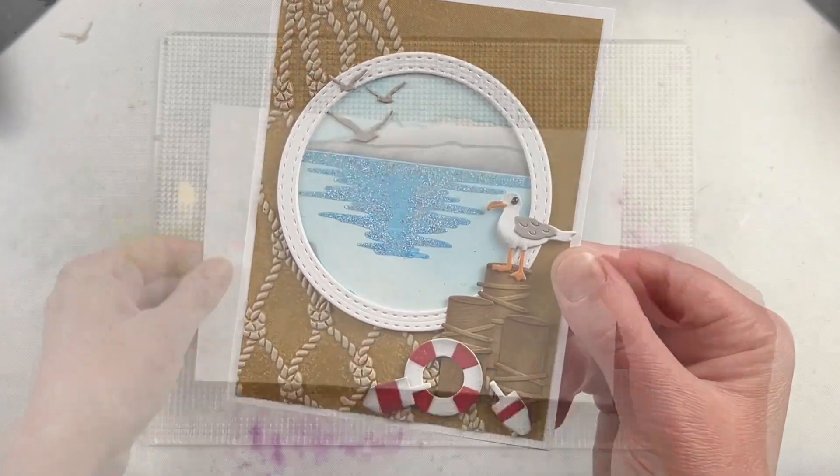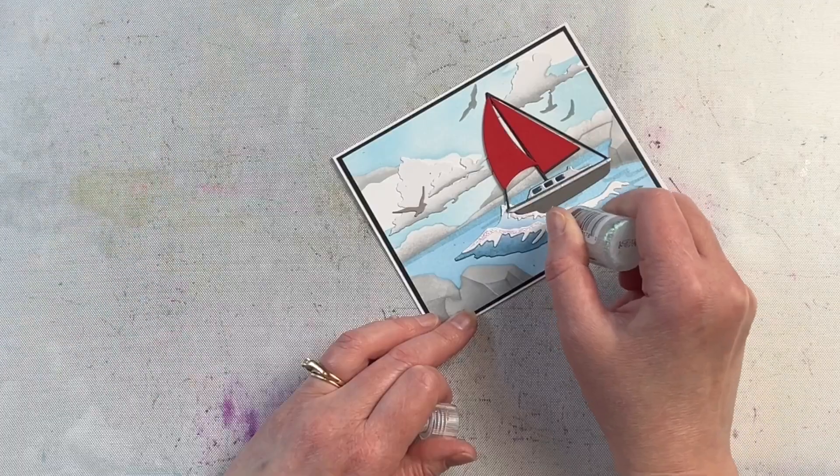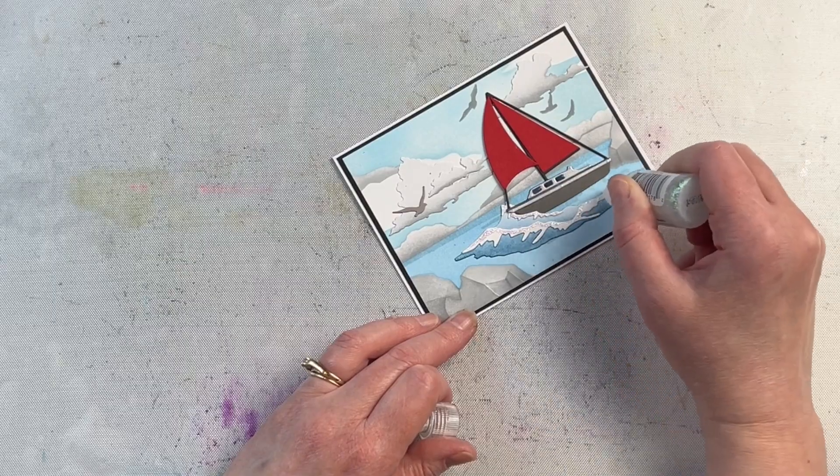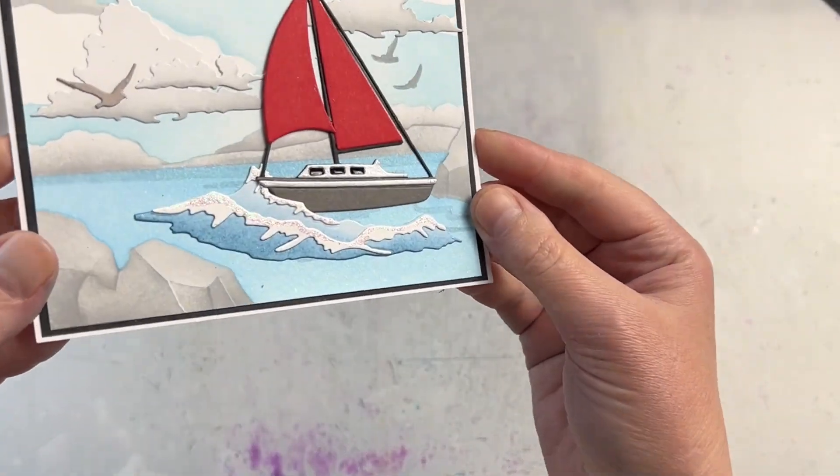For the next card I used that same stencil set, kept the color scheme fairly simple, but I made my colors slightly darker and I added a shimmer spray to the water. It's hard to see on the video, but that water just sparkles.